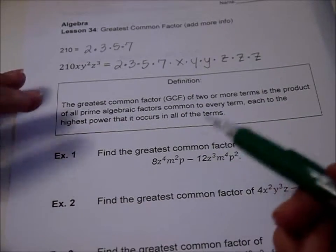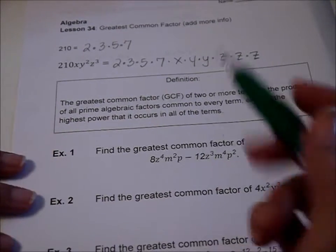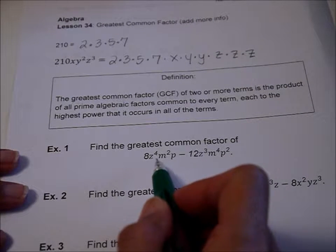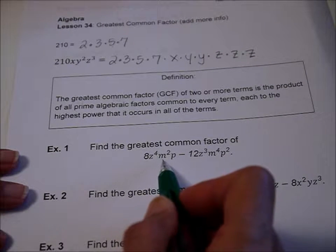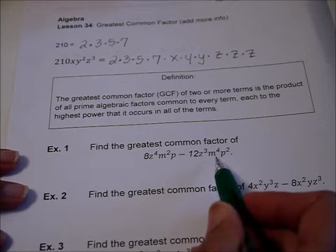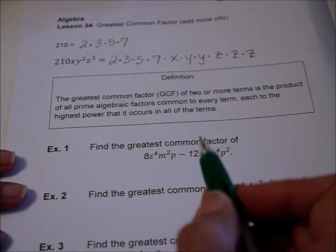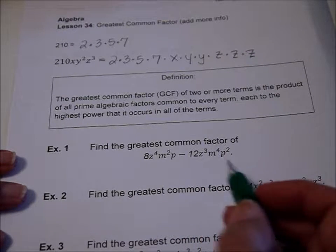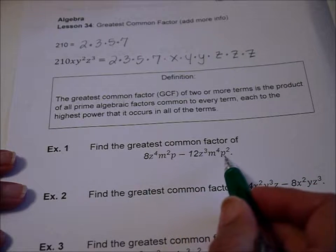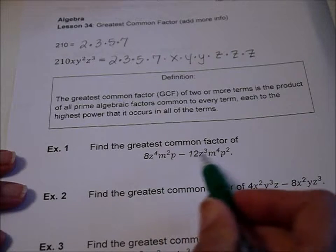So let's jump into an example. Find the greatest common factor of 8z⁴m²p minus 12z³m⁴p². What that means is find the biggest term that goes into both of these.